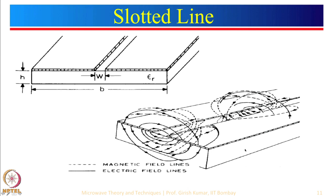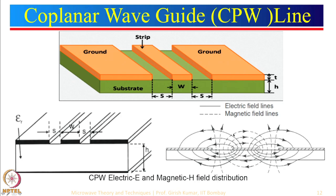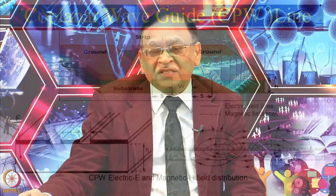We also looked at some other variations like slot line and coplanar waveguide, but these lines are relatively more lossy in the sense that there will be more radiation losses. They are many times better as an antenna option than as a microstrip circuit option. That is why in this course we will focus more on the microstrip circuit.